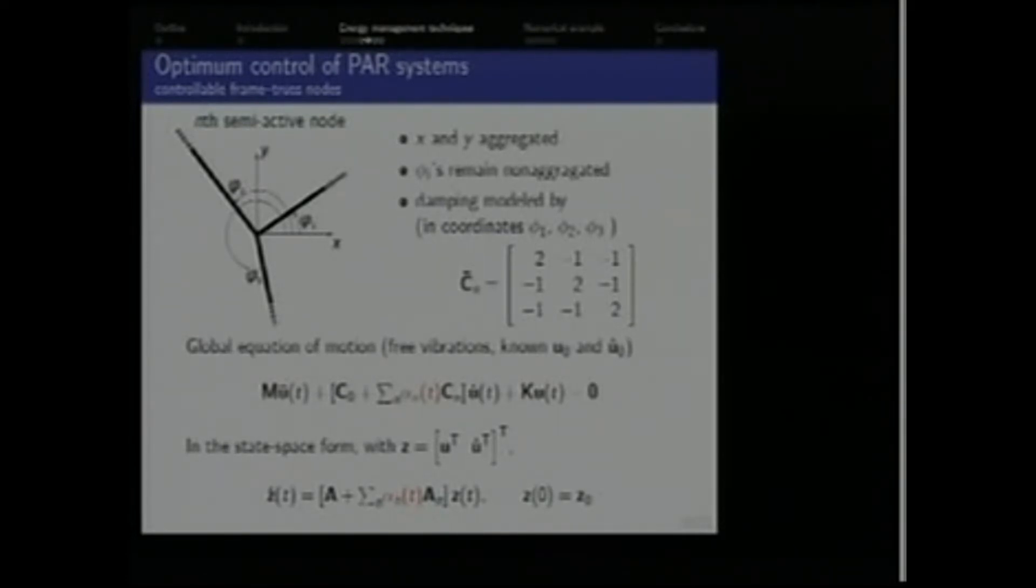So this is our semi-active node, a two-dimensional frame which connects three elements. At the stage of assembly of global matrices we do aggregate translational modes of freedom, but we do not aggregate rotational degrees of freedom. So we only couple them by damping matrix of this form, here formulated in rotational degrees of freedom. So basically we can damp the relative motion of the rotational degrees of freedom. If you look at the global equation of motion for the free vibration case, we obtain something like that. And our goal basically is determination of the optimum time evolution of the control functions alpha, which do affect only the damping matrix. So this means that we are within the realm of bilinear control systems. And our tool of choice is the Pontryagin minimum principle, which requires the system to be formulated in the state space form.